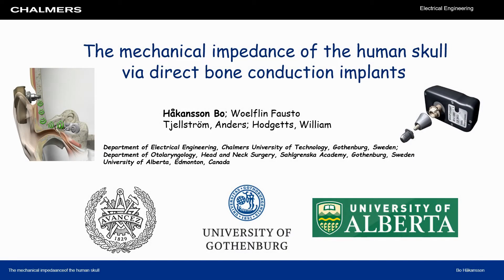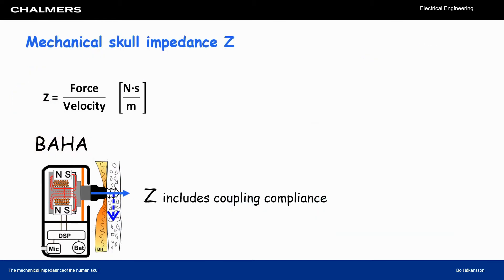My name is Bo Hakansson and I'm going to present our study about the mechanical impedance of the human skull via direct bone conduction implants. The mechanical impedance is defined as the excitation force over response velocity. Knowledge of this impedance is important for understanding how a transducer in the bone anchor device interacts with the load, which also includes the coupling compliance.